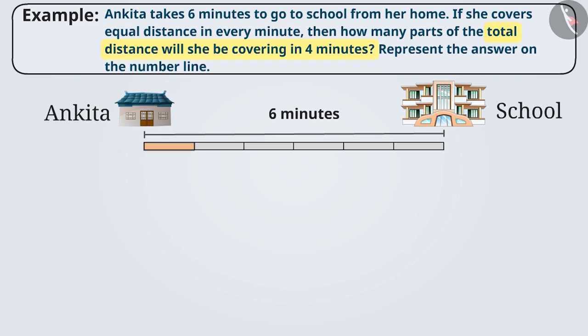As you can see, in the first minute, Ankita covers 1 part of the total distance which can be represented in a fraction as 1 by 6. Similarly, in 2 minutes, she will cover 2 equal parts of the total distance which can be represented as 2 by 6.